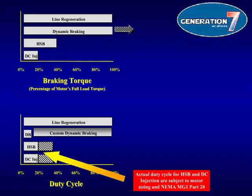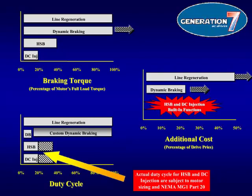High-slip braking and DC injection duty cycles vary depending on parameter settings and motor sizing, and are subject to meeting the NEMA MG1 Part 20 standards. Looking at additional cost, although high-slip braking and DC injection may not offer the same braking torque or duty cycle as line regeneration or dynamic braking, they are built into the drive and require no additional cost. Dynamic braking can cost up to 25% of the drive's price, whereas line regeneration can cost up to 50% of the drive's price. Comparing the application to these criteria enables the correct braking method to be determined.